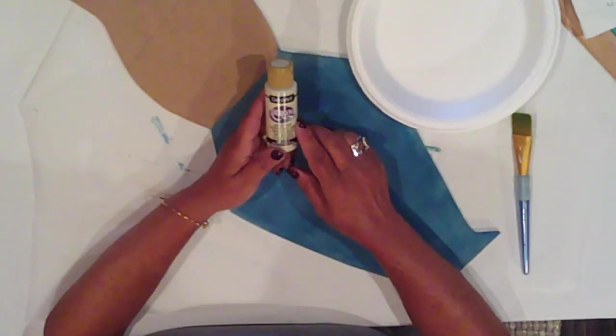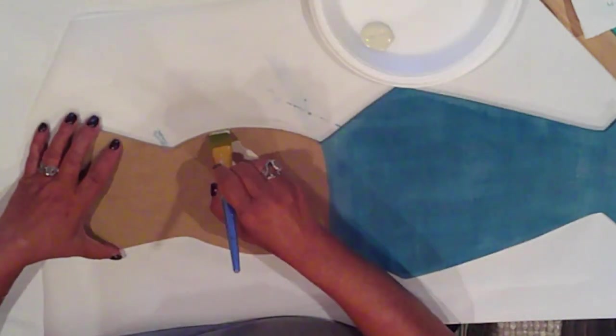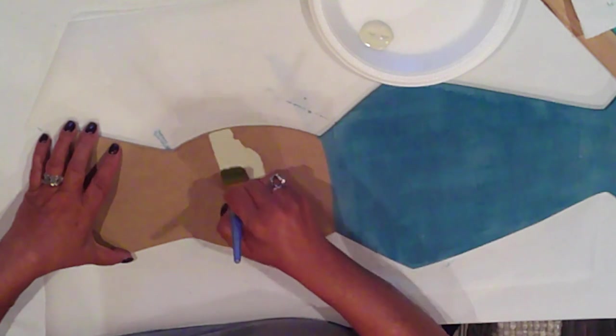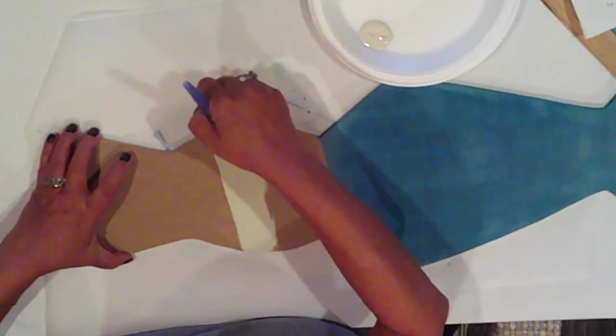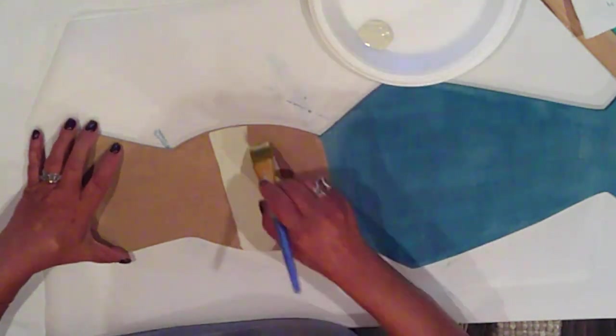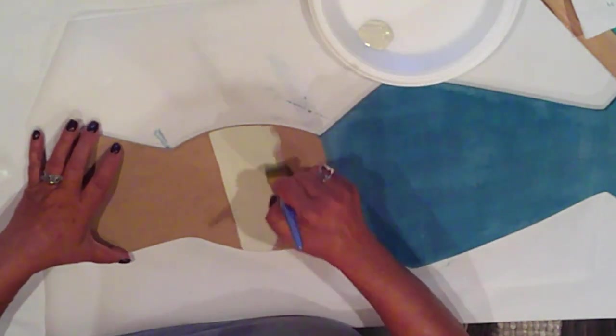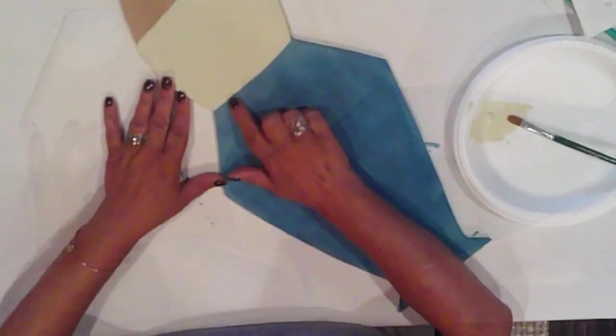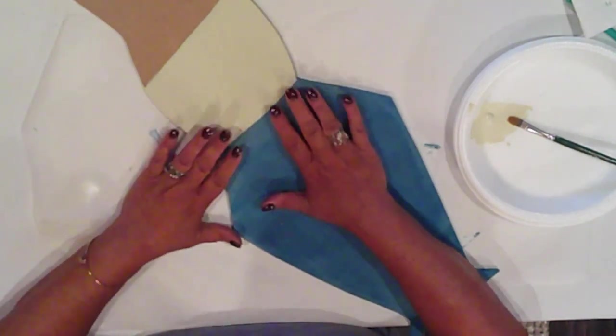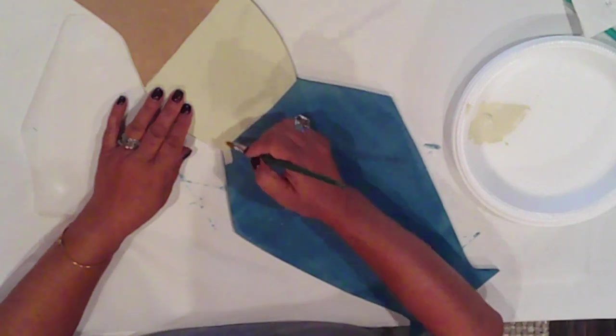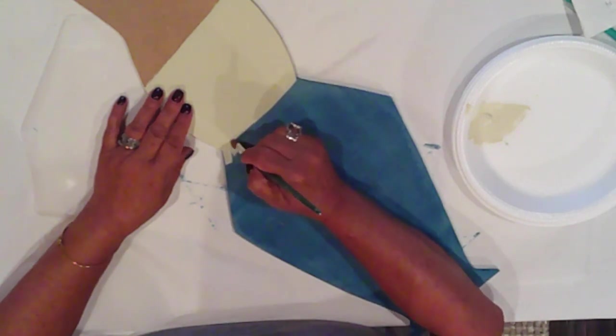I'll base coat his face with Americana Sun Bleached. Along the neckline I'll paint some French knots to make it look like his face is a fabric sack and is cinched at the neck.